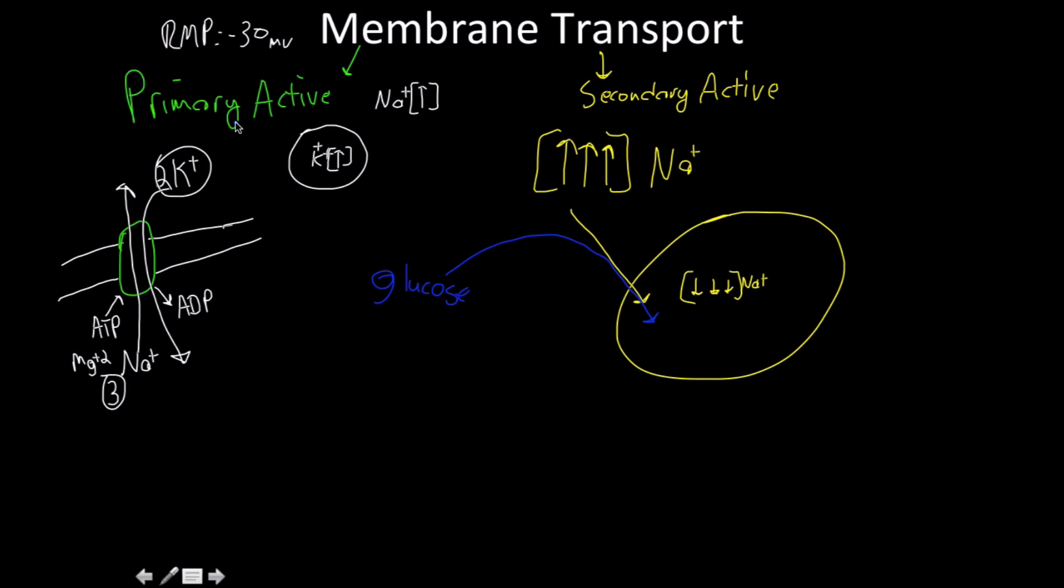So yes, you can have primary active transport existing in the absence of secondary active transport, but not vice versa.